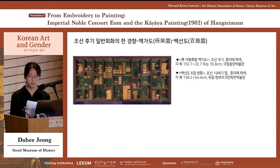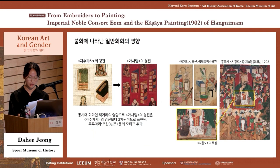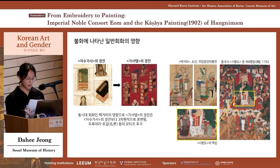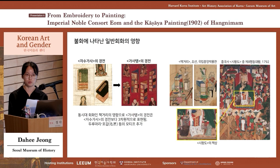Royal women and painter monks referenced such trends to conceive the idea of replacing Ga Sa with paintings. Royal women were exposed to a variety of paintings in the palace, and painters incorporated motifs into the Buddhist paintings, such as the motif of Chaekori bookshelves in the Ga Sa Taeng of Hangnimam. Ga Sa Taeng was not only functional but also incorporated trends and motifs of the time. It is a result of the combination of socio-economic conditions surrounding the production of Buddhist embroidery and the painting conventions of the time.